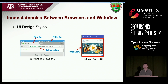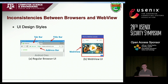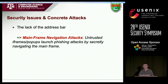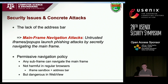So what are the inconsistencies between regular browsers and WebView, and why are they causing security issues? There are mainly two types of inconsistencies. The first type is about UI design. This picture shows the comparison between a regular browser and WebView. We can notice WebView only provides one area for showing web content, without any address bar or tab bar. And this causes a series of security issues. The first security issue is from the lack of an address bar.